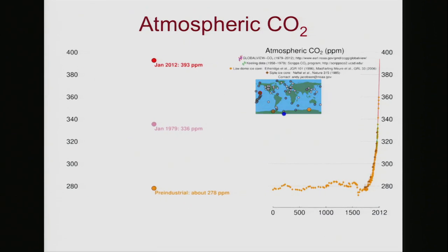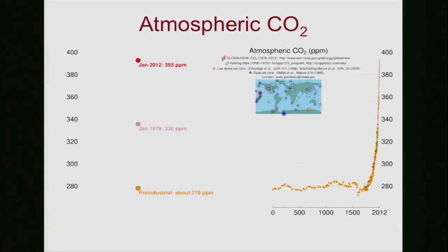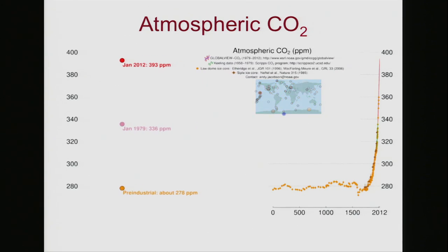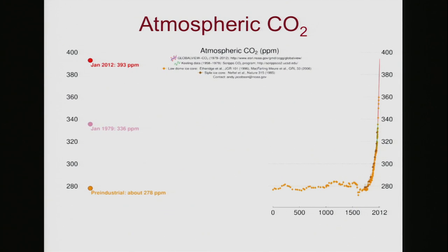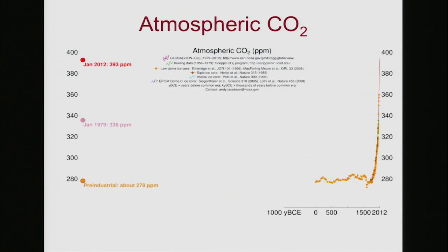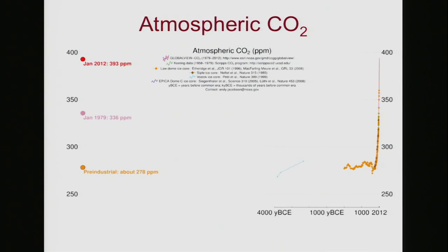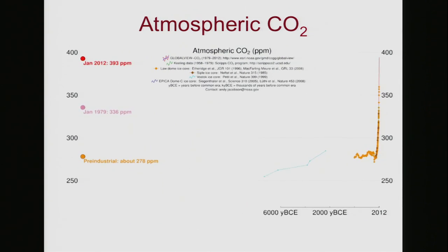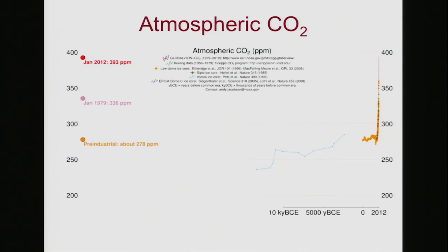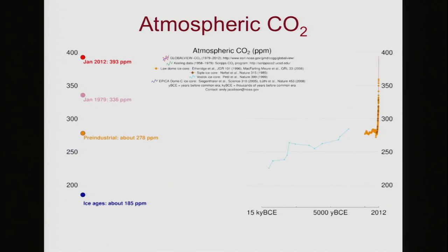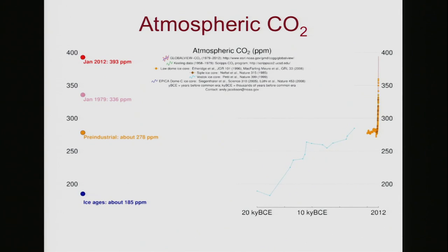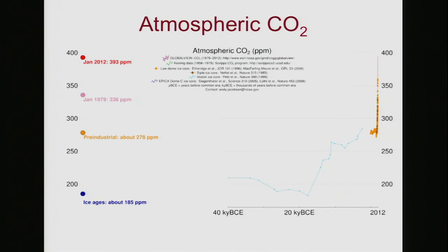You can see that back in 1500, the typical CO2 was only about 278 parts per million. On the right-hand side it's extending back even further — these are estimates of CO2 based on ice cores taken out of Antarctica.